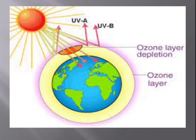Imagine if there is no ozone layer — the ultraviolet rays will be entering onto the earth and will cause skin allergies, skin diseases, and sunburns to all human beings. Along with that, animals and plants will also suffer. So we have to protect the ozone layer so that it prevents harmful rays from entering into our atmosphere.